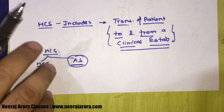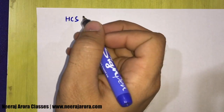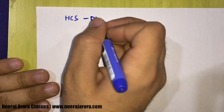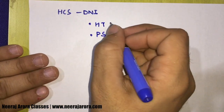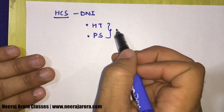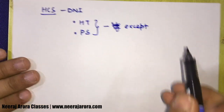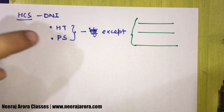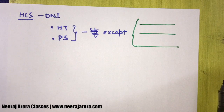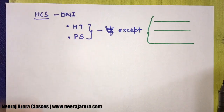Health care service does not include: Hair transplant aur Plastic surgery. Mega exemption mein generally speaking hair transplant aur plastic surgery covered nahi hain, kyunki yeh health care service ki definition mein covered nahi hain. Lekin EXCEPT - in cases mein hair transplant aur plastic surgery include kar liye jaayenge: when undertaken to restore or reconstruct anatomy or functions of body, due to development abnormalities, injury aur trauma. Toh in situations mein hair transplant ya plastic surgery health care service ki definition mein include hogi.